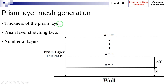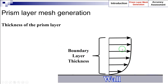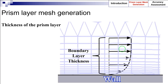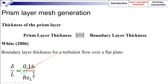Now let's see how we can calculate the prism layer thickness. Ideally, the prism layers must cover the entire boundary layer on a wall. As shown in this figure, the prism layer mesh should cover the whole boundary layer, so the prism layer total thickness must have the same height as the boundary layer. Therefore, to specify the prism layer thickness, this equation proposed by White (2006) to estimate the boundary layer thickness for a turbulent flow over a flat plate can be used.